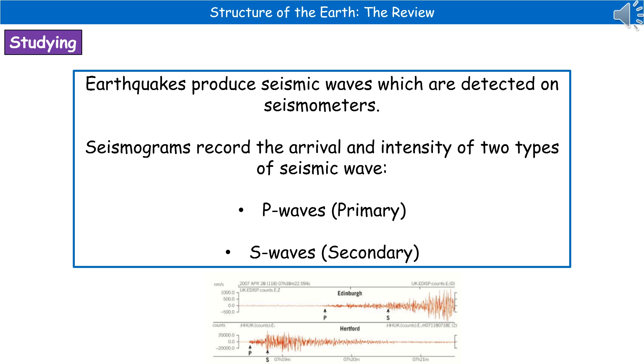The seismometer produces a chart called a seismogram that records the arrival time and intensity of two types of seismic waves: P-waves or primary waves, and S-waves or secondary waves. There's an example of a seismogram at the bottom there. You can see the P and S waves labeled, and the height of the line tells us the intensity.